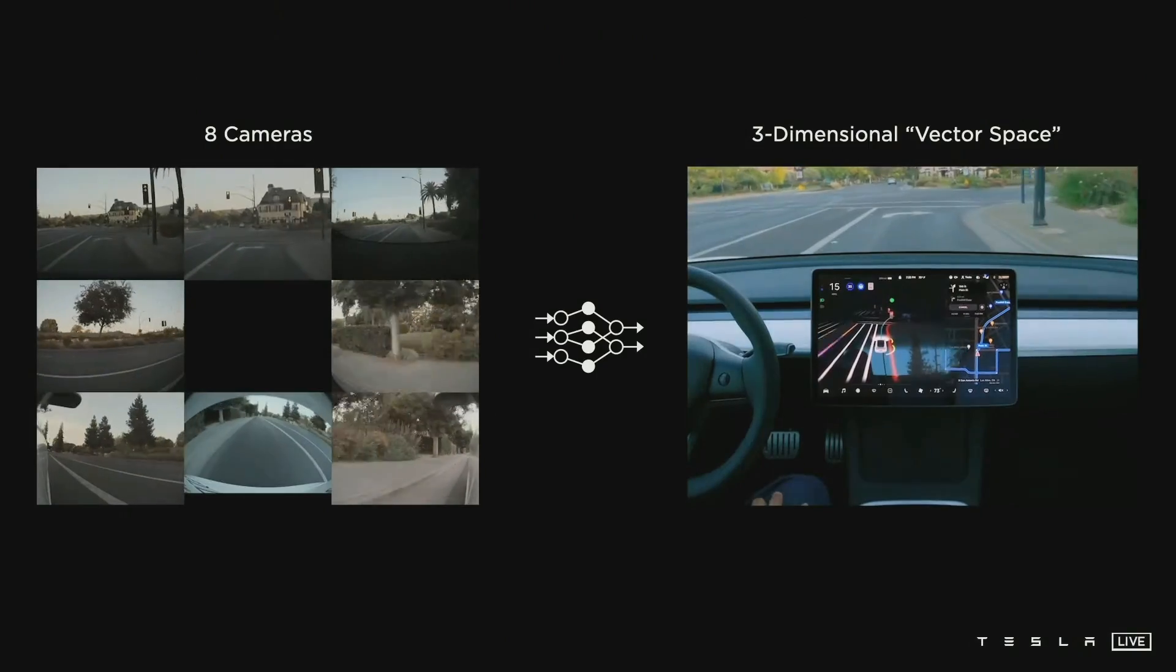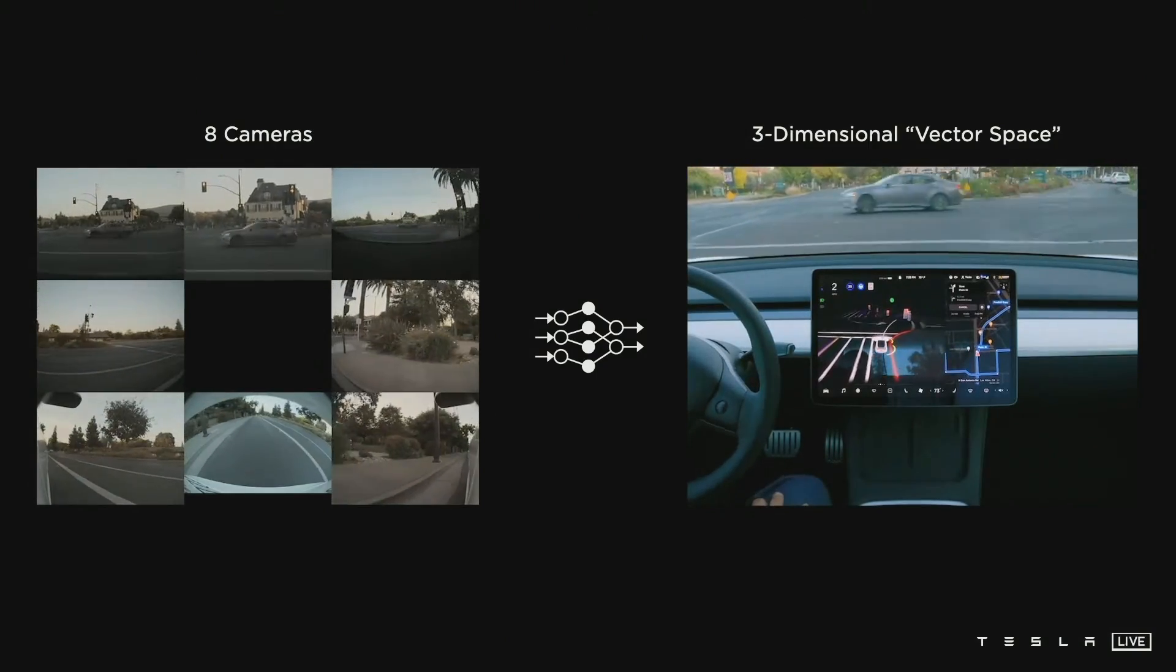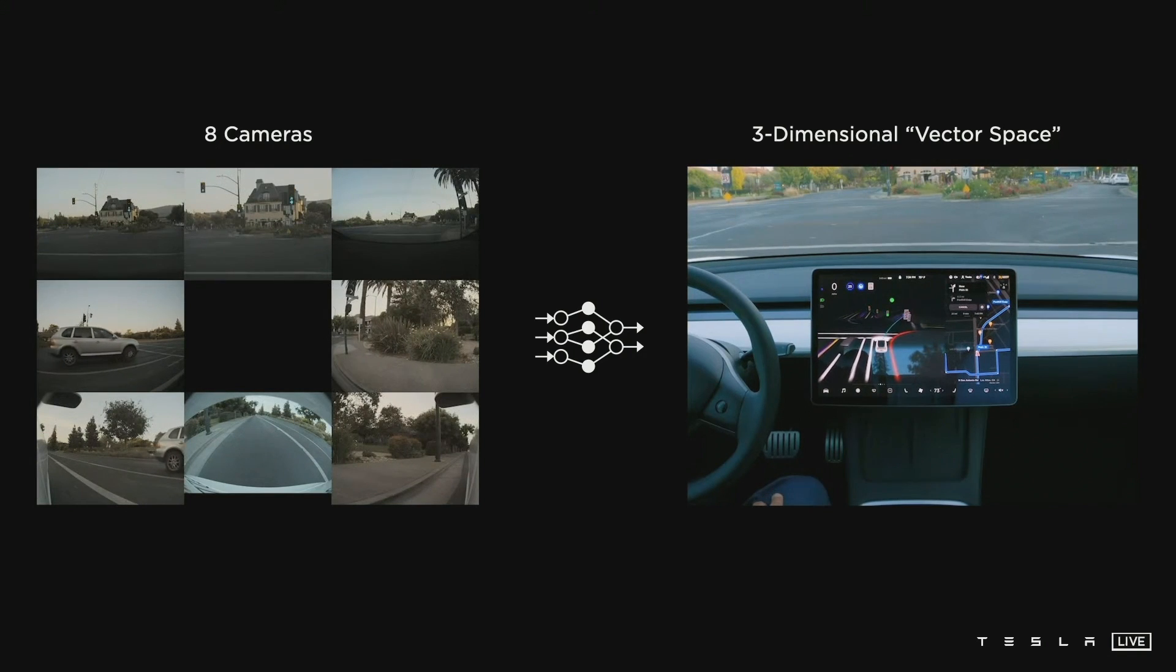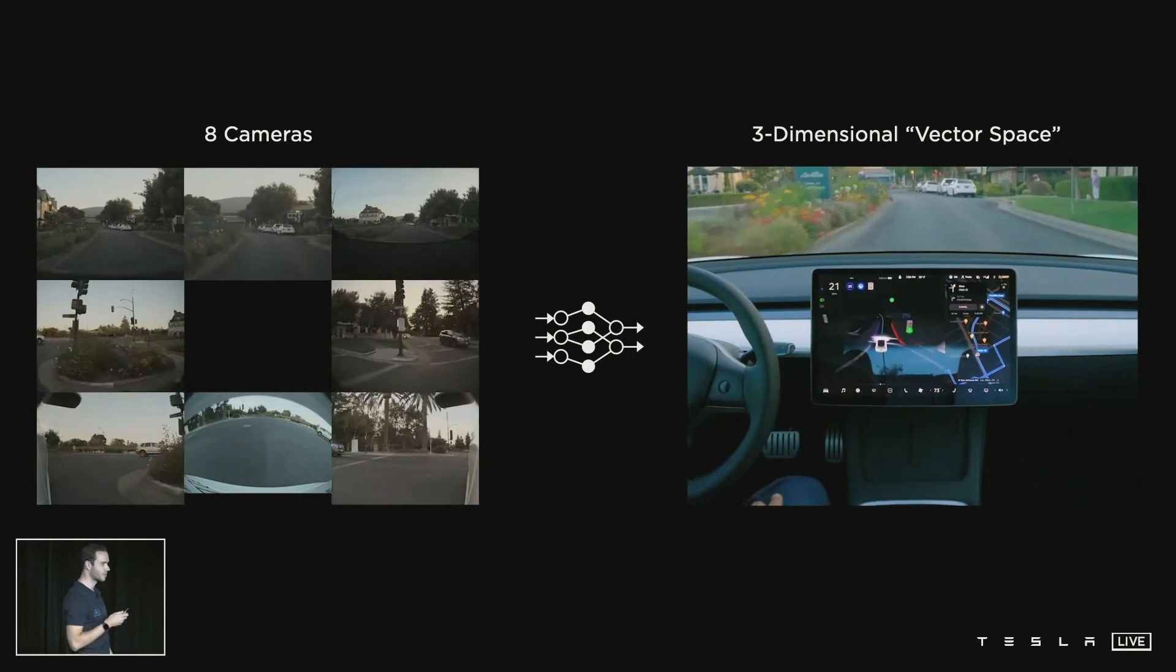Those of you who have seen the full self-driving beta can appreciate the rate at which the Tesla neural net is learning to drive. Here I'm showing the video of the raw inputs that come into the stack, and then neural networks process that into the vector space. You are seeing parts of that vector space rendered in the instrument cluster on the car.